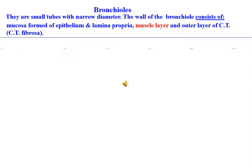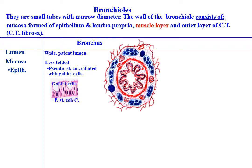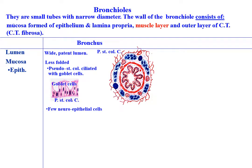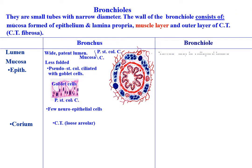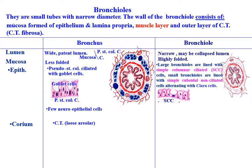Comparison between bronchus and bronchiole: The bronchus has a wide patent lumen with less-folded mucosa. Epithelium is pseudostratified columnar ciliated with goblet cells, and may contain few neuroepithelial cells. The corium is loose areolar connective tissue. The bronchiole has a narrow, possibly collapsed lumen with highly folded mucosa. Large bronchioles are lined with simple columnar ciliated cells, while small bronchioles are lined with simple cuboidal non-ciliated cells alternating with Clara cells.